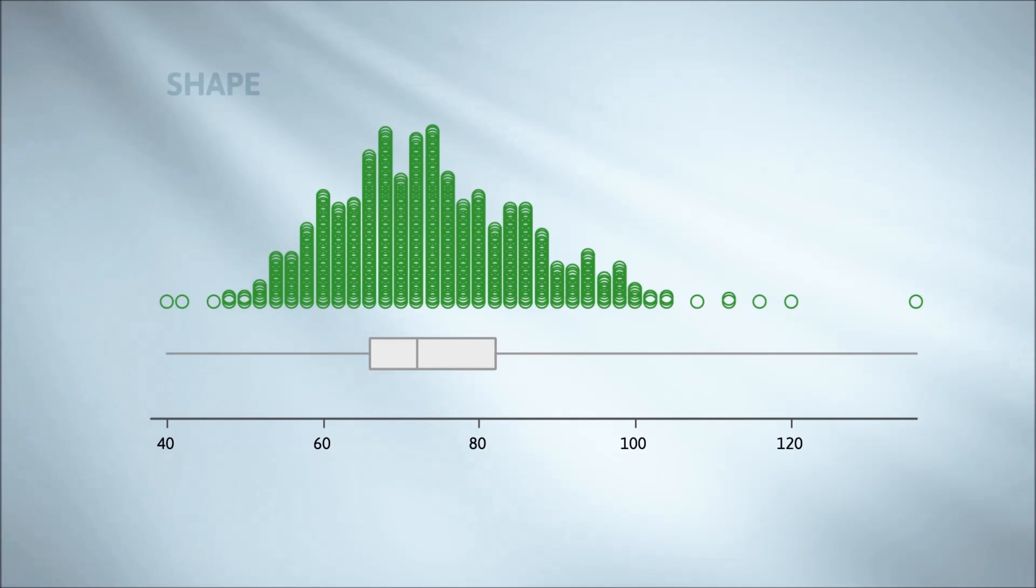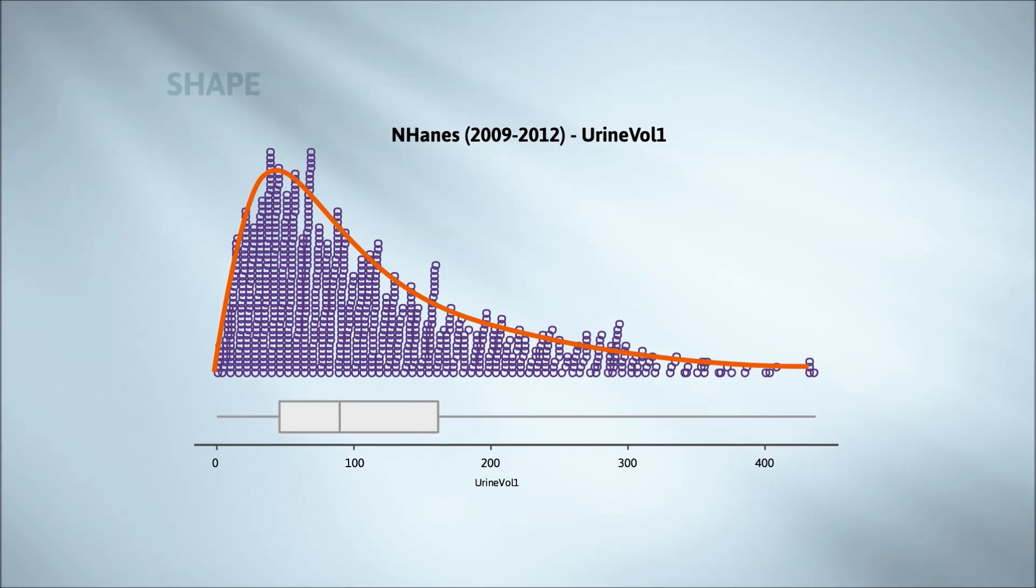We're now focusing on interpreting shapes. Whereas pulse rates form a symmetric mountain shape, the results for the first urine volume test are severely skewed, bunched up towards zero on the left hand side, with a long stretched out upper right hand tail. We call this shape positively skewed.